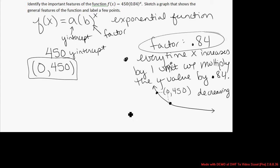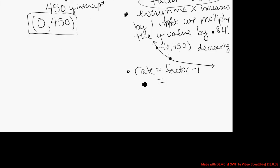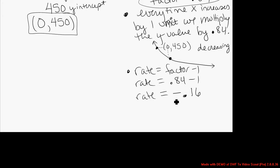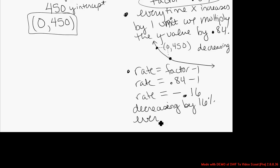The factor is 0.84. The rate is equal to the factor minus 1, so for this particular function, our rate is equal to 0.84 minus 1, which gives us negative 0.16. We usually describe the rate as a percentage. Since it's negative, we know it's a decreasing function — this function is decreasing by 16% every time x increases by 1.